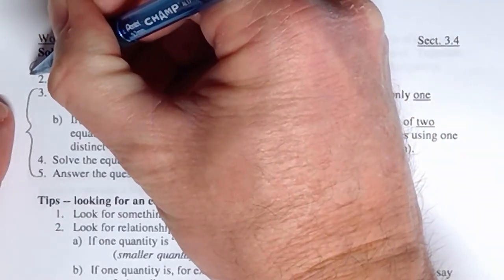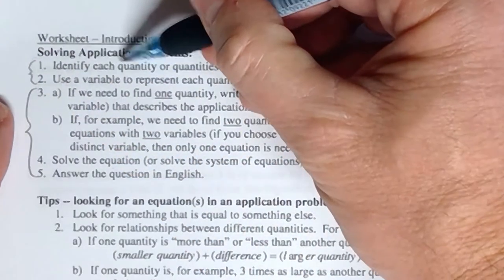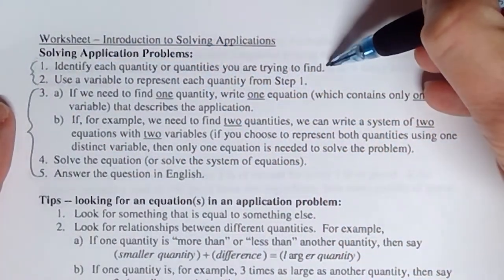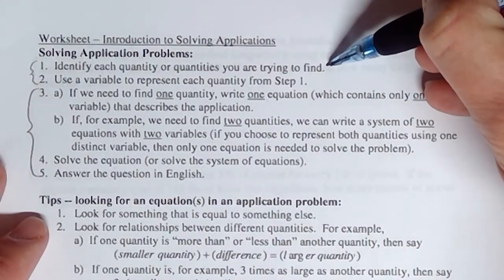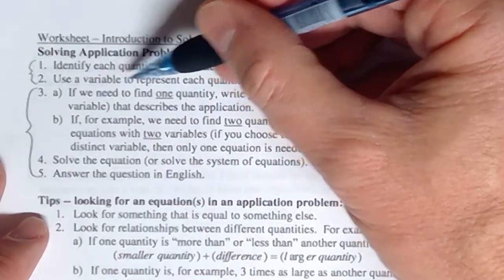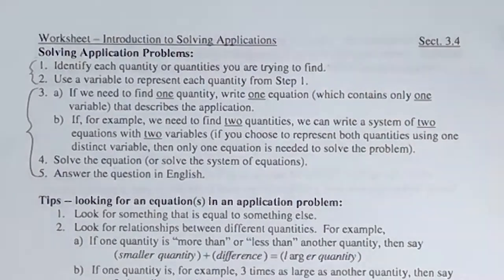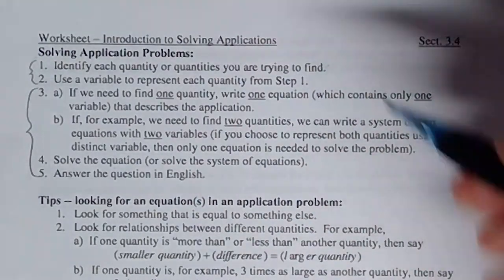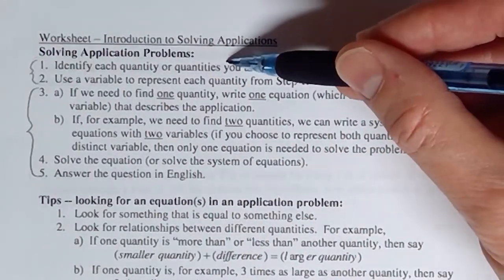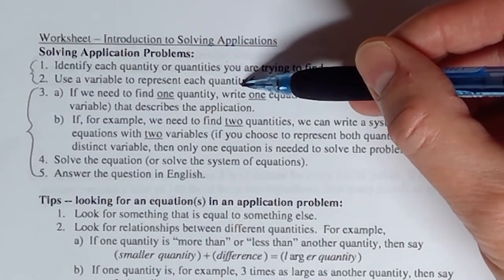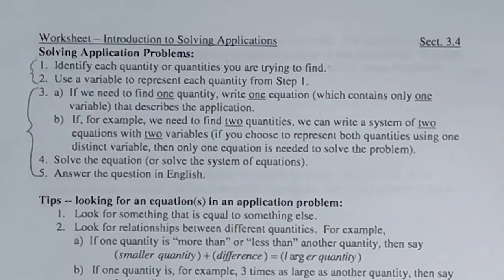These two steps right here are where you figure out — identify — what you're trying to find. In other words, what question are they asking you? Then you use a variable to represent that quantity. Step one: figure out the question. Step two: attach a variable to it.